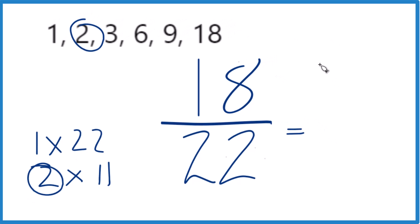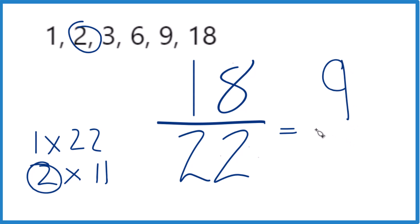So we divide 18 by 2. That gives us 9. We divide 22 by 2, and we get 11.